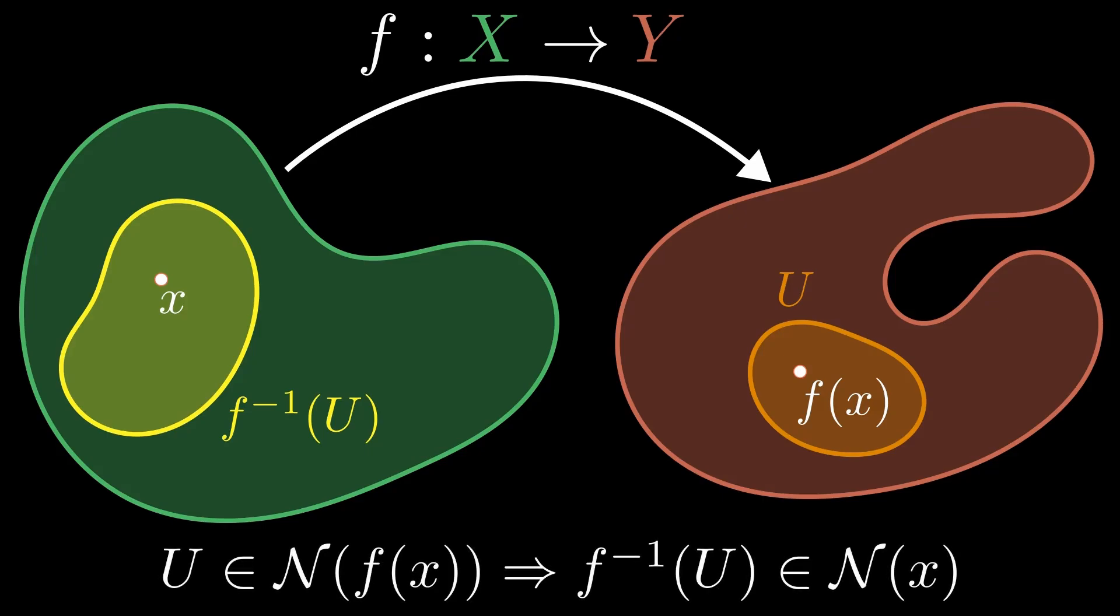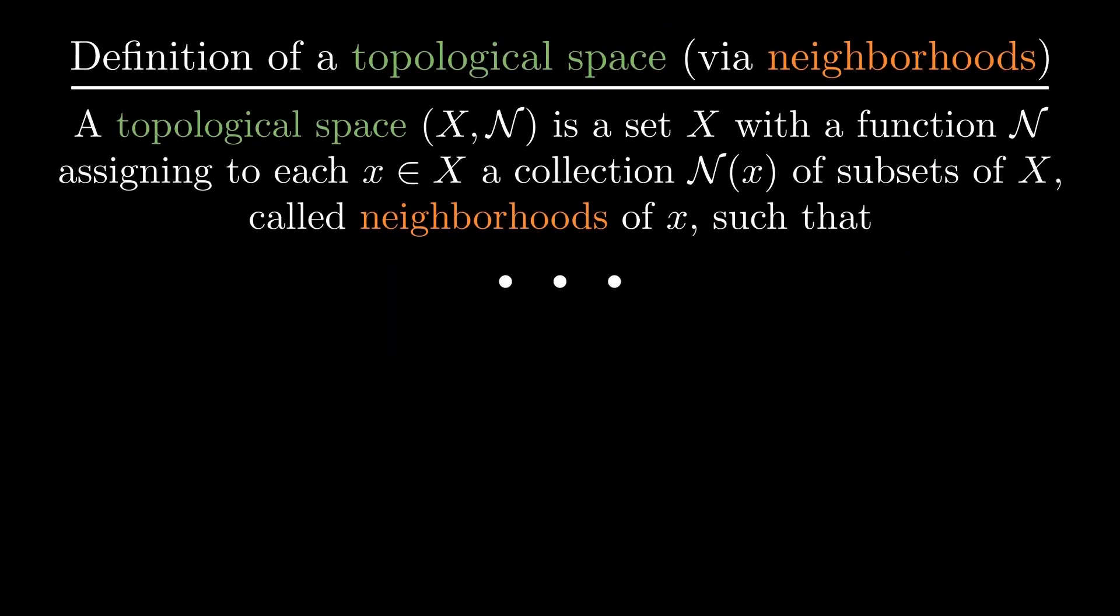Now back to the definition of a topological space. The first property we require is that the entire space is a neighborhood of every point.